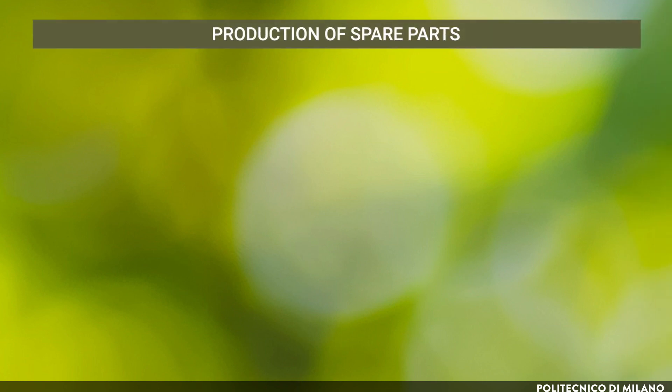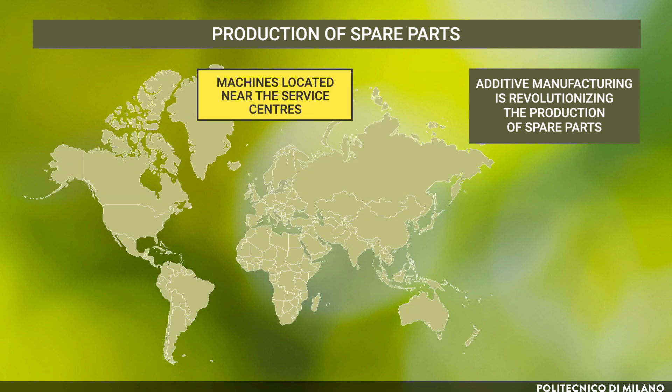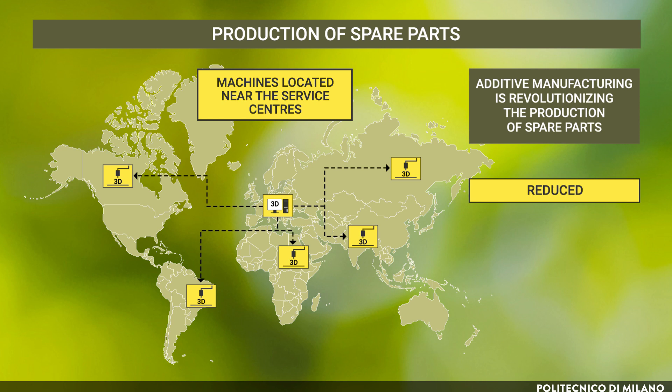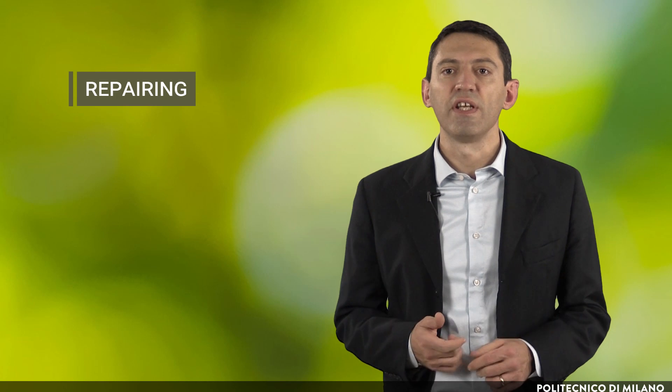The fifth driver is the production of spare parts or product repairing. Additive manufacturing is revolutionizing the production of spare parts, especially in the case of obsolete plants and machinery for which spare parts are no longer available or cannot be produced with the original technologies. With machines located near service centers, shipping time, transport, and costs related to customs barriers are reduced. Repairing can also be performed by additive manufacturing techniques that allow adding new material on a worn part. From a sustainability perspective, extending the product lifetime postpones the need for replacement and the consumption of new raw materials and resources.